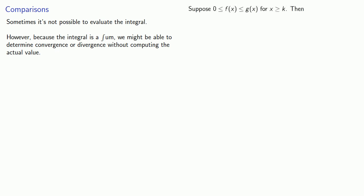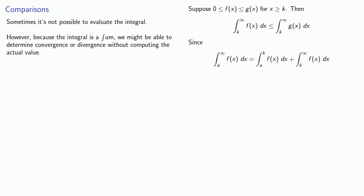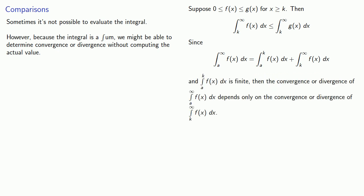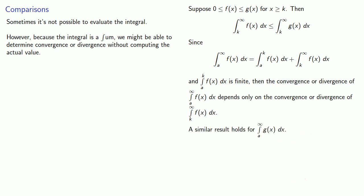Suppose 0 ≤ f(x) ≤ g(x) for x ≥ k. Then the integral from k to infinity of f(x) should be less than or equal to the integral from k to infinity of g(x). Since the integral from A to infinity of f(x) equals the integral from A to k of f(x) plus the integral from k to infinity of f(x) dx, and the integral from A to k is finite, convergence or divergence of the integral from A to infinity depends only on the integral from k to infinity. A similar result holds for the integral from A to infinity of g.